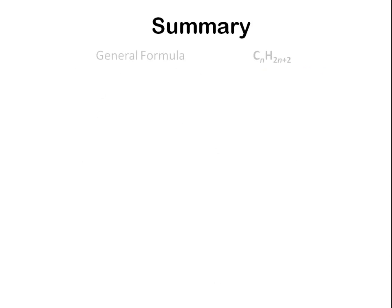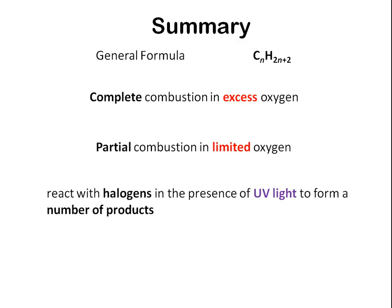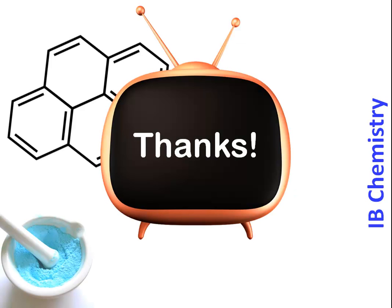To summarise, alkanes have the general formula CnH2n+2. Alkanes can undergo complete combustion in excess oxygen or partial combustion in limited oxygen, and alkanes can react with halogens in the presence of UV light to form a number of products. Thanks for watching this Video Tutor tutorial. Until next time!